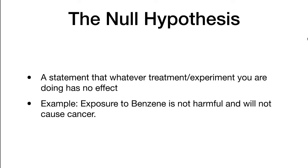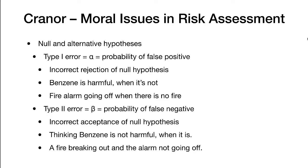Just some reminders. The null hypothesis: this is a statement that whatever treatment or experiment you are doing has no effect. For example, exposure to benzene is not harmful and will not cause cancer. Some other review things. The null and alternative hypotheses. A Type I error, alpha, is the probability of a false positive. You never want this in science. It is the incorrect rejection of the null hypothesis.